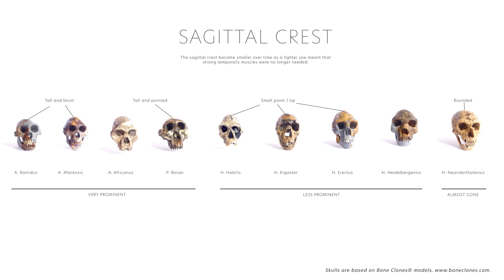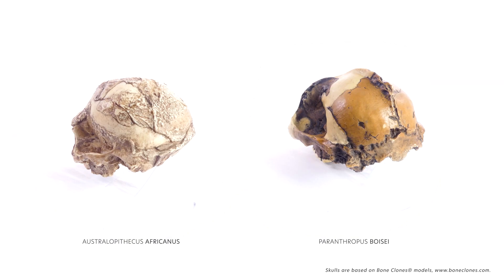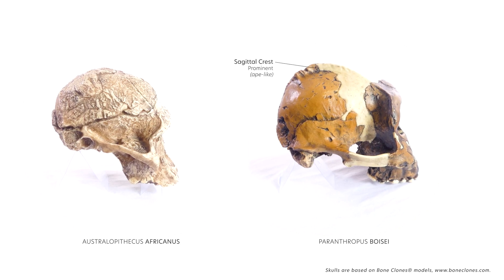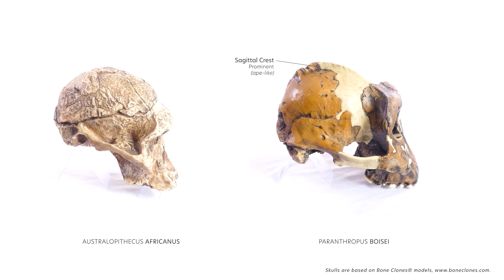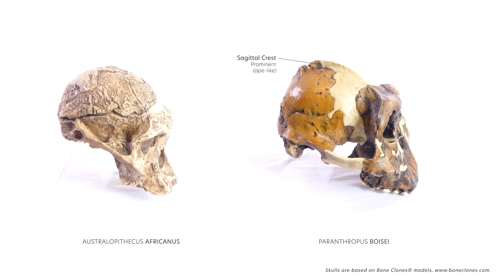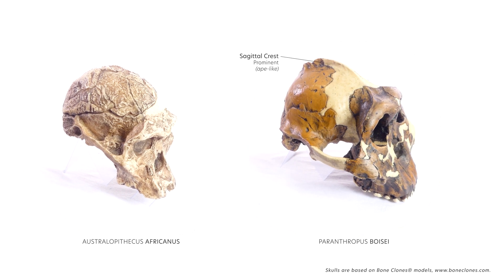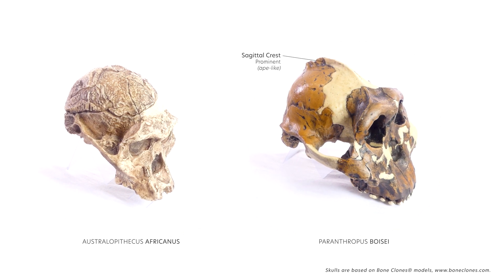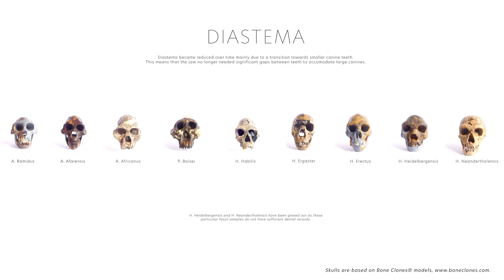Tough plant material no longer required the muscle power associated with grinding. Paranthropus boisei, for example, had a very prominent sagittal crest due to a diet of fibrous plant material and hard abrasive nuts and seeds that required a lot of grinding on the molars and large temporalis muscles to support this.